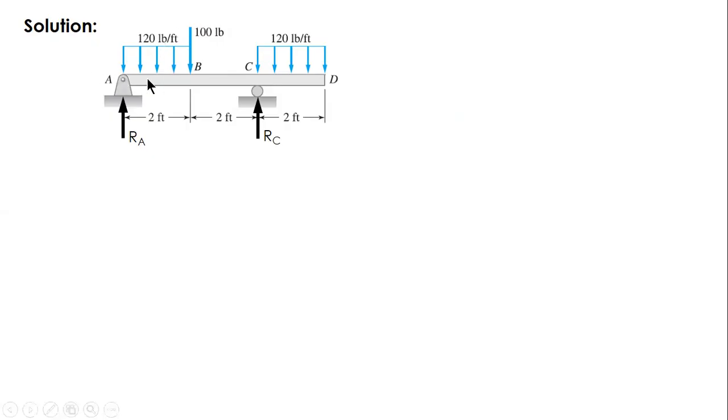But since we don't have any horizontal load, therefore the horizontal component of reaction at A is zero. So there are only two unknowns: vertical reaction at A and reaction at C. First let us solve for RC. If we sum up moment at A, it is suggested that if you will sum up moment, choose a point that is extreme - extreme left or extreme right.